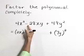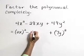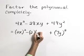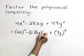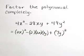And our middle term, negative 28xy, is a negative of 2 times our first term, 2x, and this last piece, 7y.